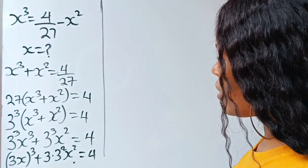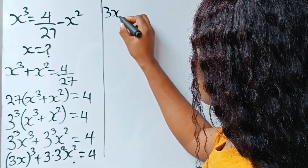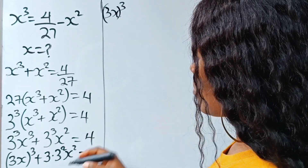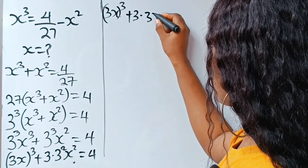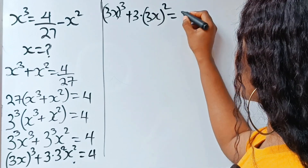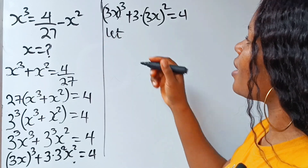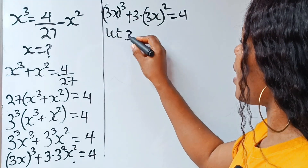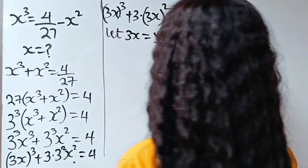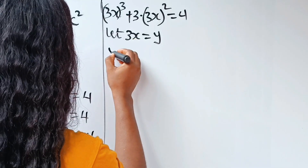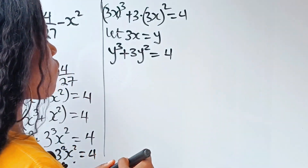Now at this point, we have 3x to the power of 3, both of them to the power of 3, plus 3 multiplied by 3x squared is equal to 4. We have 3x appearing here. Let's assign an alphabet — let 3x be equal to y. And if that is the case, then we will have that y to the power of 3 plus 3y squared is equal to 4.